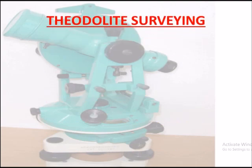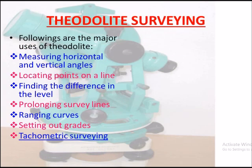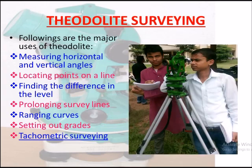Theodolite surveying. Major uses of theodolite: measuring horizontal and vertical angles, locating points on a line, finding the difference in level, prolonging survey lines, ranging curves, setting out grades, and tachymetric surveying. This figure shows theodolite surveying.